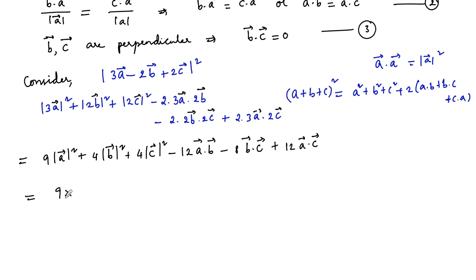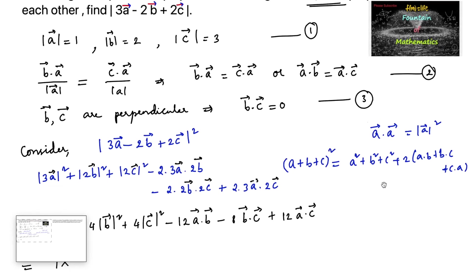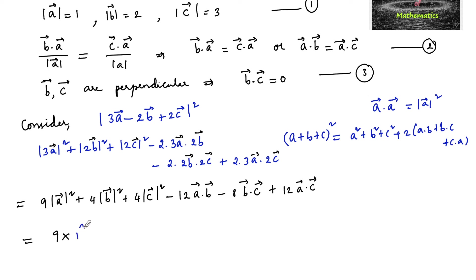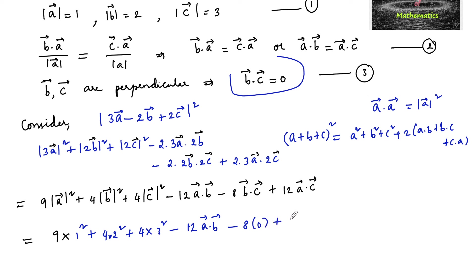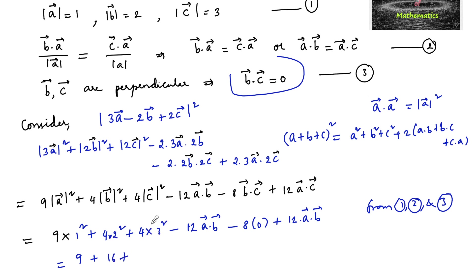Substituting mod A = 1, mod B = 2, mod C = 3: we get 9(1²) + 4(2²) + 4(3²) - 12(A·B) - 8(B·C) + 12(A·C). Since A·B = A·C from equation 2, the -12(A·B) and +12(A·C) cancel. And since B·C = 0 from equation 3, the 8(B·C) term is 0.